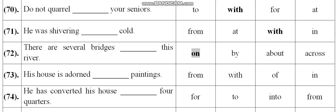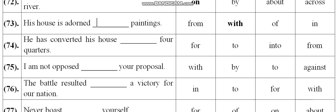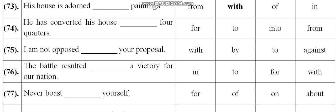Next is his house is adorned. 73rd, his house is adorned blank paintings. So his house is adorned with paintings. Now we have 74th.